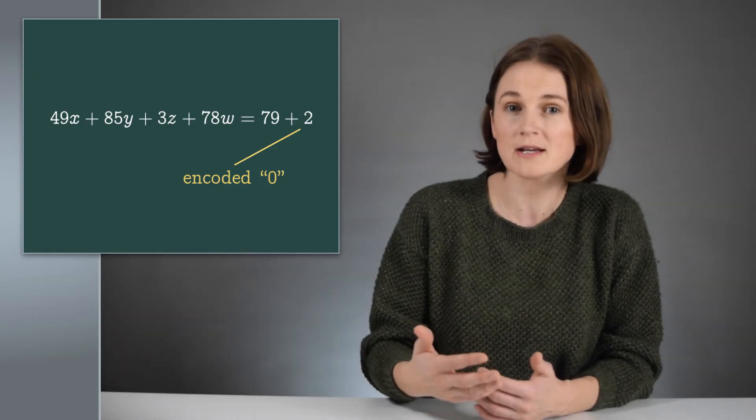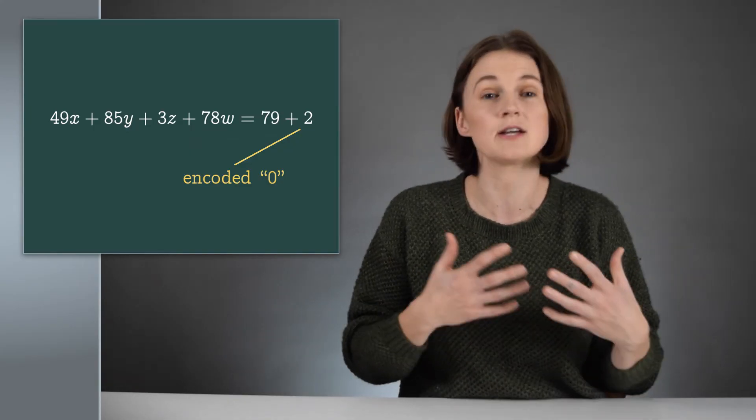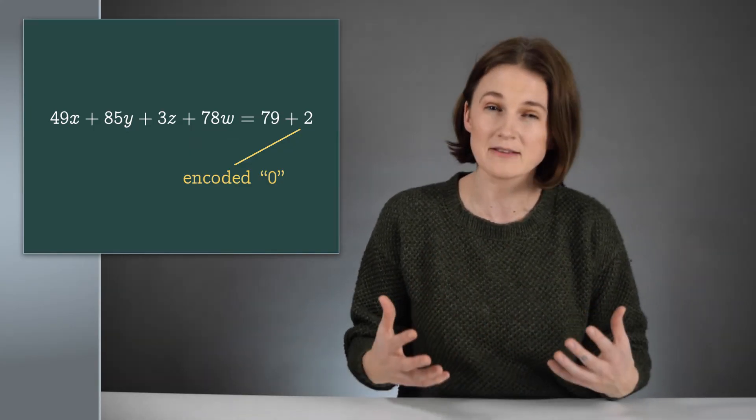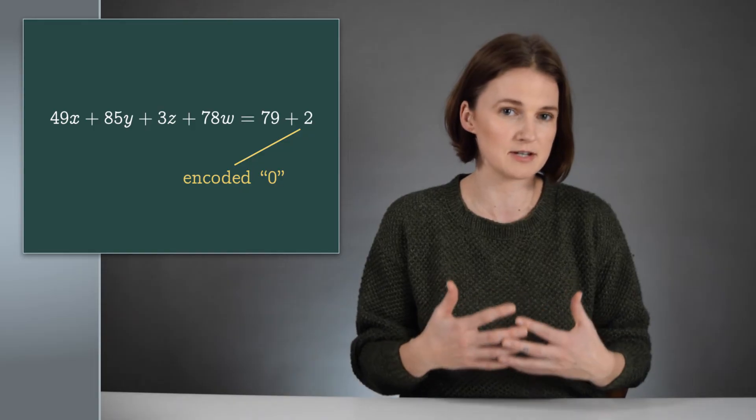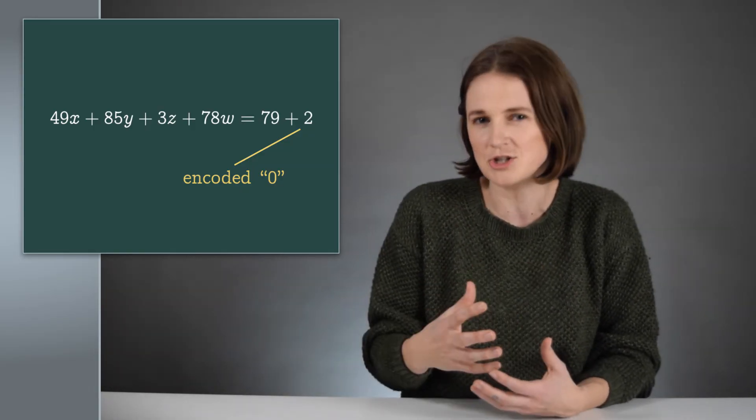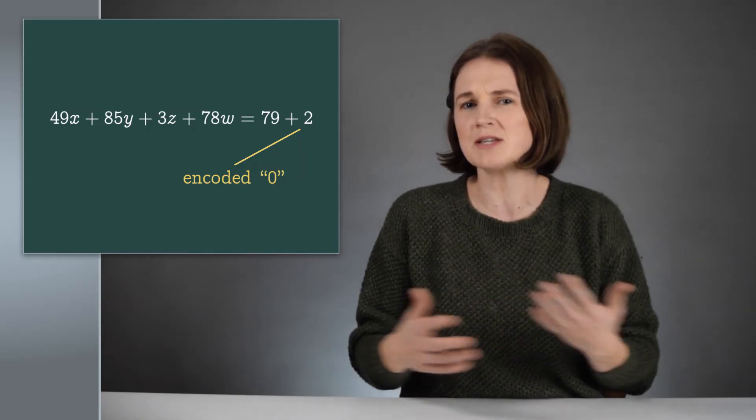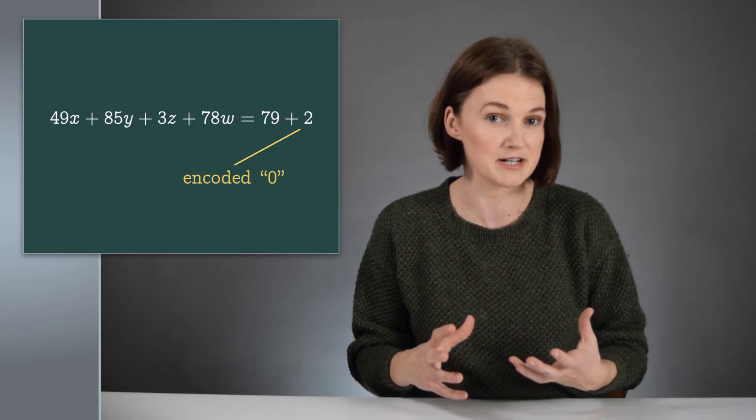Bob only sent one bit, a zero or one, but he could build up from there. For example, sending over enough information for Alice and Bob to develop a shared secret key. The learning with errors problem is kind of a foundation for many different cryptographic schemes. There's a seemingly endless number of ways to modify and build on it.